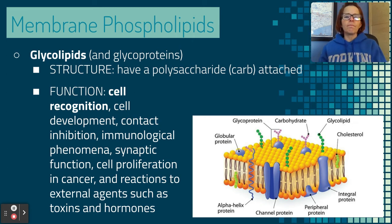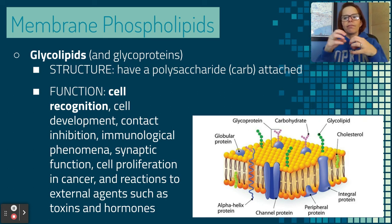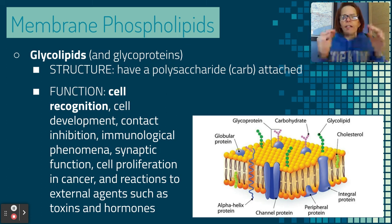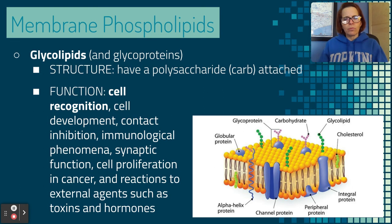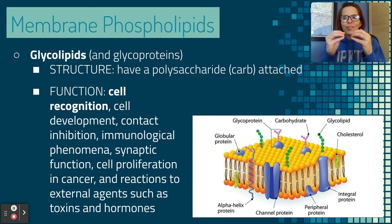Glycolipids are also important in cell development and contact inhibition. Contact inhibition is the idea that if you have a wound and cells got ripped away, cells start dividing to close the wound. When they touch each other, they've closed the wound and inhibition signals them to stop dividing. They recognize each other through glycolipids — when they touch, they recognize it's time to stop dividing. This is a flaw in cancer cells: cancer cells are supposed to have contact inhibition but don't, so they keep dividing even after touching, which forms a tumor.